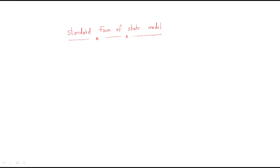Hello everyone. In the last session we discussed the introduction of state space analysis — what is the state and how to find the state variables from a given circuit. In this session we will discuss the standard form of the state model and how to construct it.